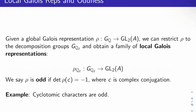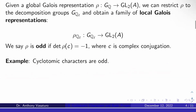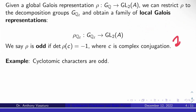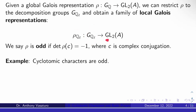Now on to some generic properties of Galois representations we'll need. If I give you a global Galois representation rho from G_Q to GL2 of A, recall the Galois groups G_{Q_L}, called the decomposition groups at each prime L, are by definition the Galois groups of Q-bar_L over Q_L. These naturally inject into G_Q, so we can view them as subgroups. That means you can restrict rho to each decomposition group G_{Q_L}, obtaining a family of local Galois representations rho_{Q_L}, from G_{Q_L} to GL2 of A.